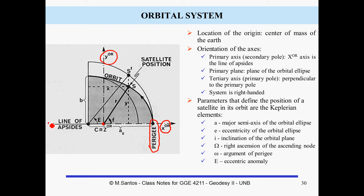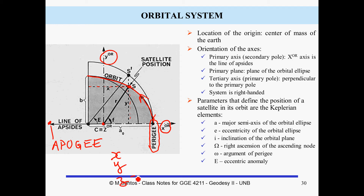The farthest point is known as the apogee, and the line connecting apogee and perigee is known as the line of apsides. For a satellite orbiting this ellipse, we can represent its position S by components in the orbital system: x and y will be non-zero numerical values, while z will always equal zero.